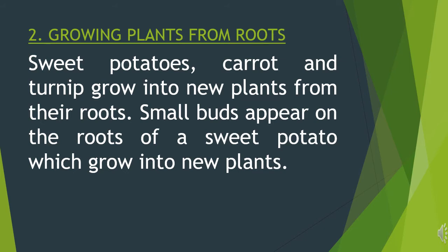Number 2: growing plants from roots. Sweet potatoes, carrot and turnip grow into new plants from their roots. Small buds appear on the roots of a sweet potato which grow into new plants.